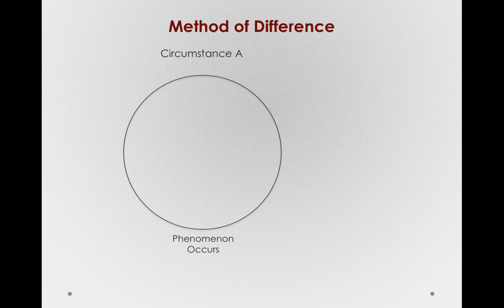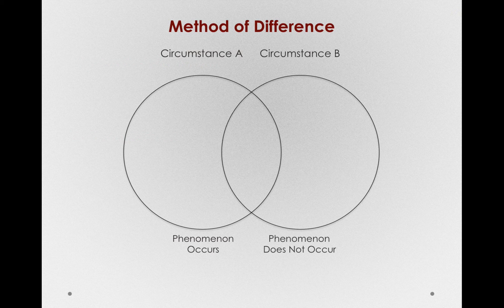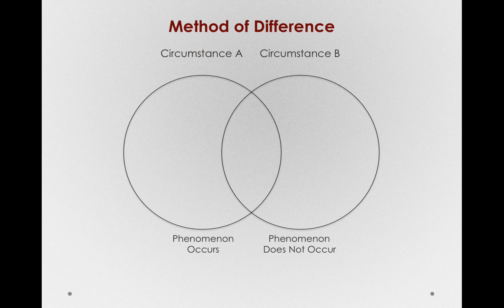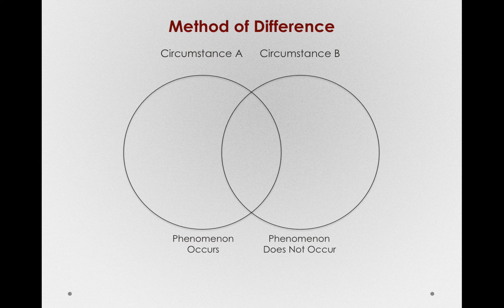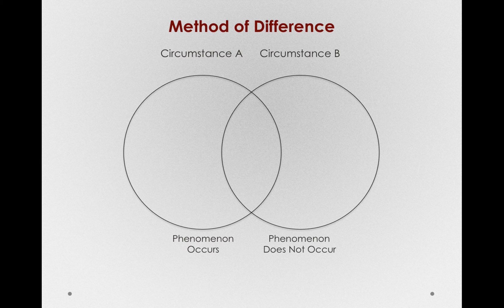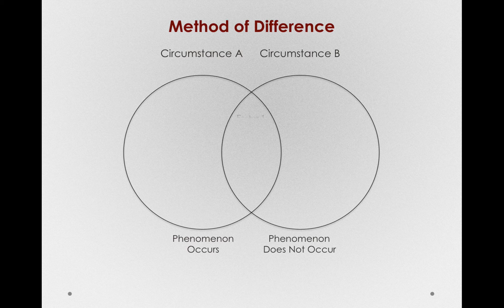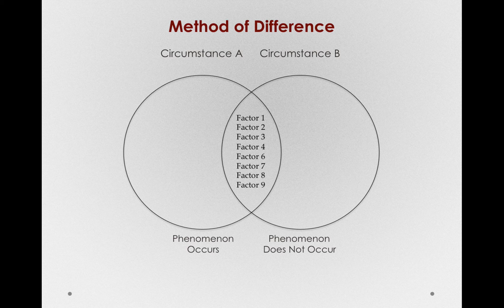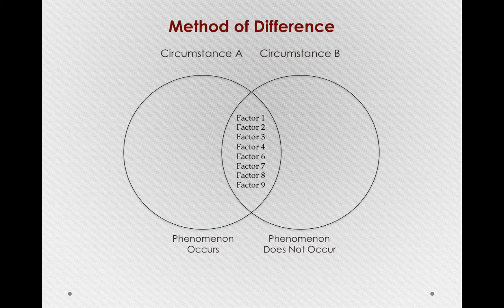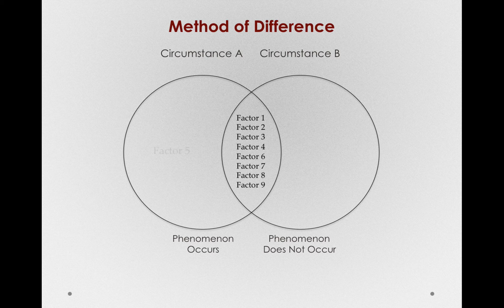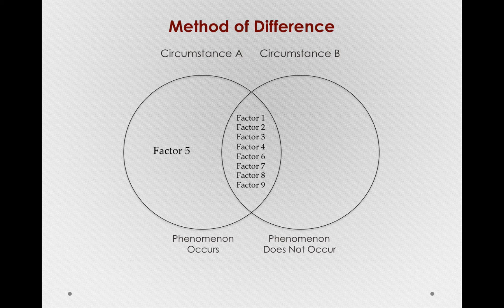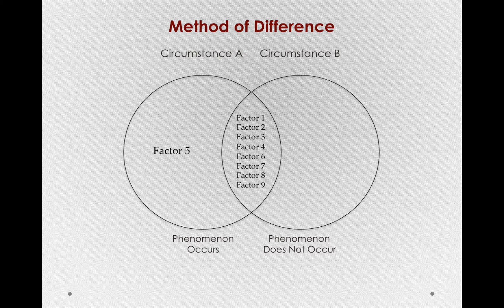In the method of difference, here we have circumstance A and circumstance B yet again, but notice in circumstance A, the phenomenon occurs, but in circumstance B, it does not occur. Let's imagine that these two circumstances have in common factors 1, 2, 3, 4, 6, 7, 8, and 9, and factor 5 only occurs in circumstance A, but not B.